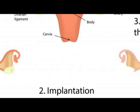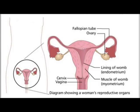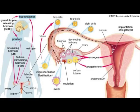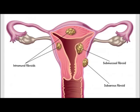Every month, an egg matures and a woman's body and uterus prepare for pregnancy. If pregnancy does not occur, the endometrial lining is released. Following menstruation, the endometrial lining builds again as the uterus prepares for a fertilized egg, during which time there is an increase in arterial and venous blood flow. This is called the proliferative phase of the uterine menstrual cycle.